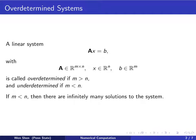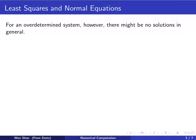We see that if m is less than n, then there can be infinitely many solutions to the system. We consider the case of an overdetermined system, that is, the number of equations are larger than the number of unknowns. In general, there might be no solutions for such a system.